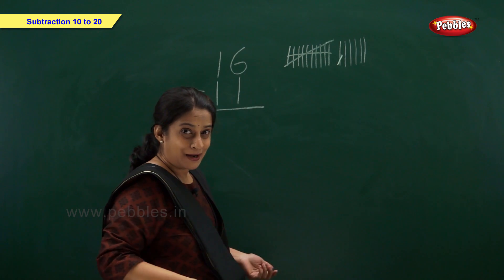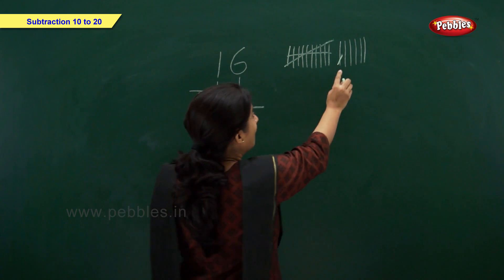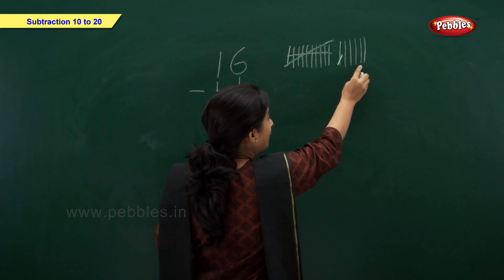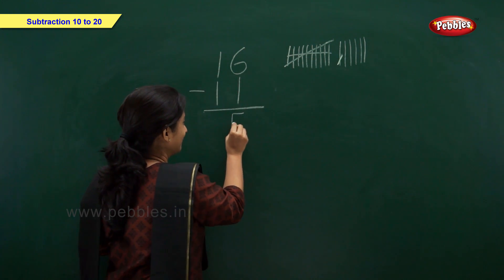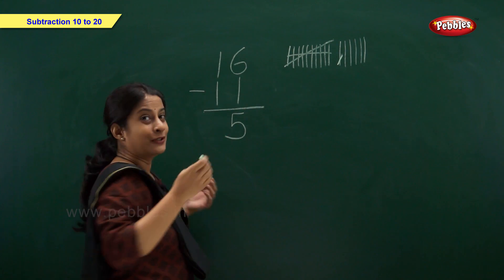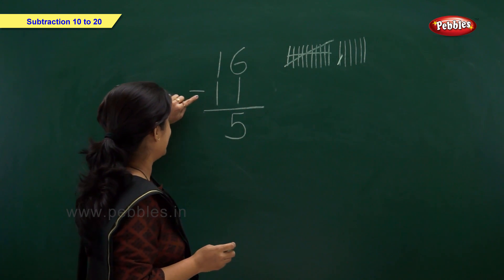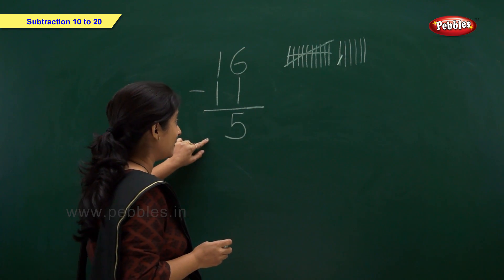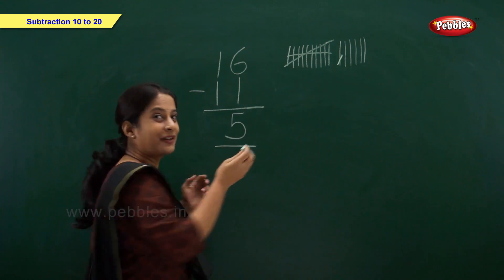So let's count the remaining ones: 1, 2, 3, 4, 5. So friends, 16 minus 11 is equal to 5.